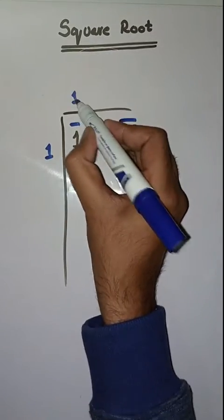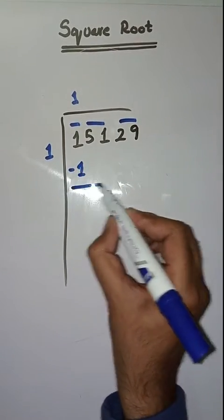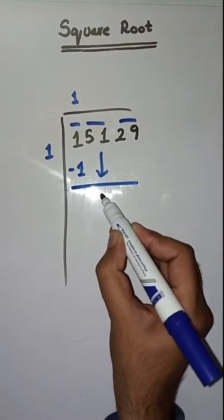So first we have to solve 1. So we take a number 1. 1 times 1 is 1. Minus karenge, mil pas aa jaega 0.